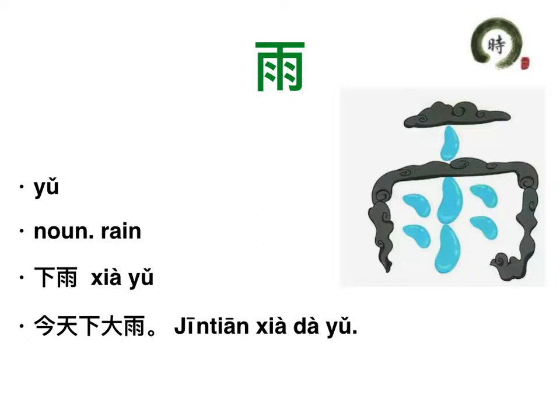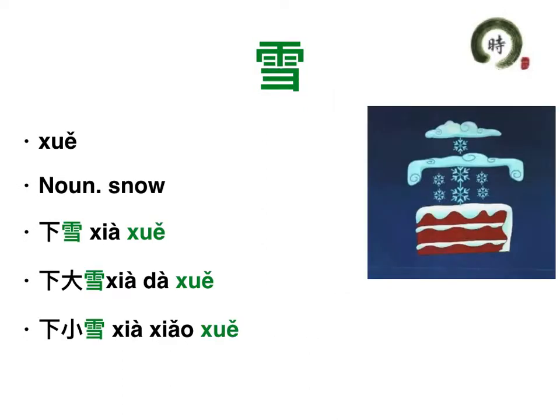The next word is 雪. As you can see, the upper part of 雪 is 雨, so here 雨 is used as a radical. 雪 means snow. We can say 下雪. 下雨. 下雪. Have a big snow — 下大雪. Have light snow — 下小雪. 非常好。